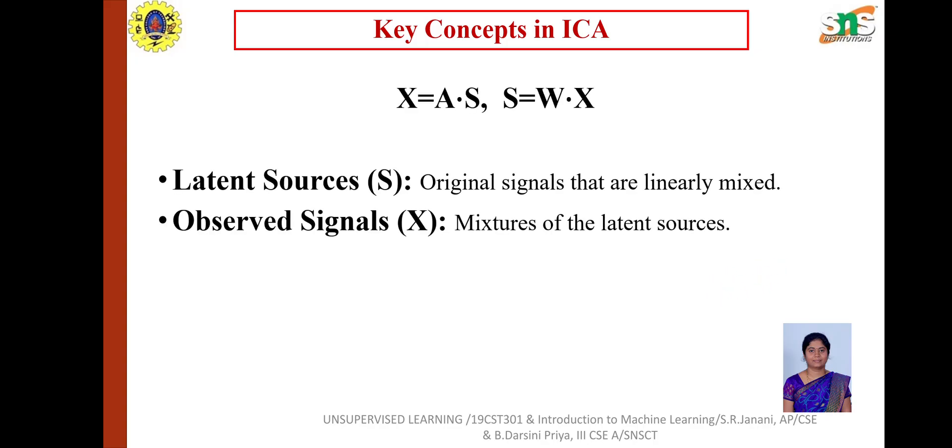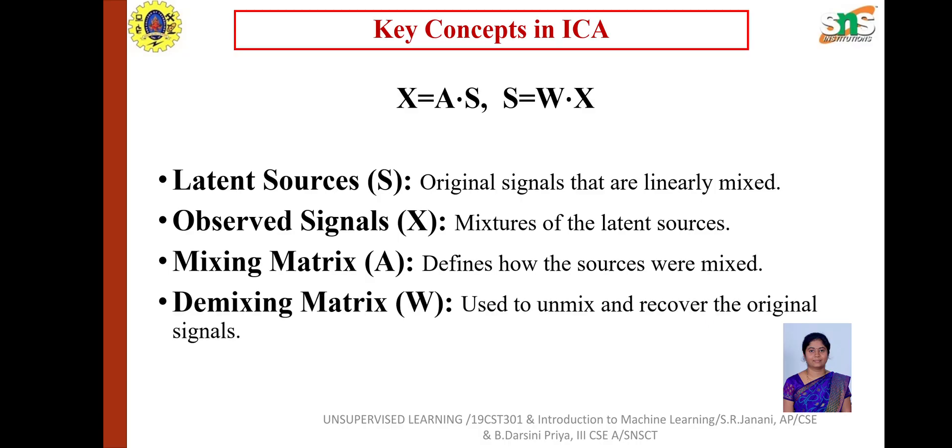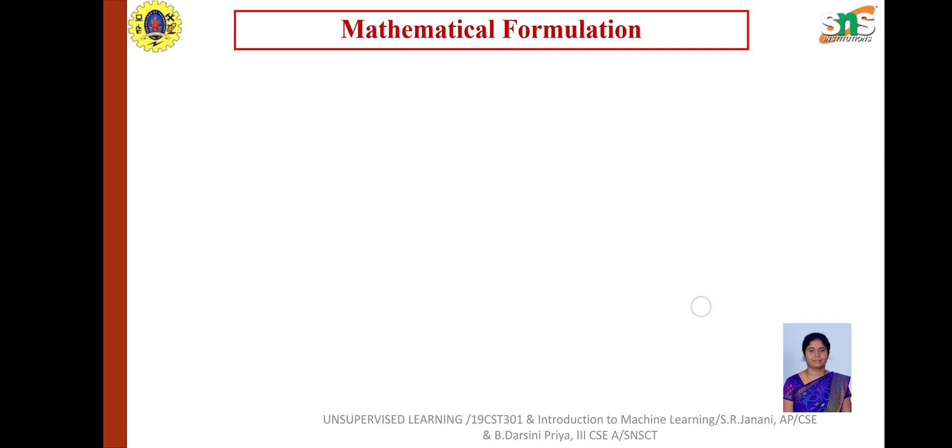Key concepts in the formula: X = A·S, where S stands for latent sources, the original signals that are linearly mixed. X is the observed signal, a mixture of latent sources. A stands for mixing matrix that defines how sources are mixed. W stands for demixing matrix which is used to unmix and recover the original signals.